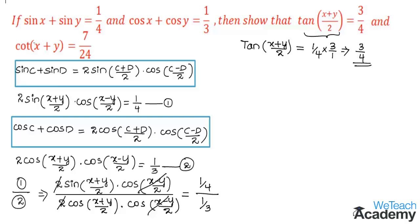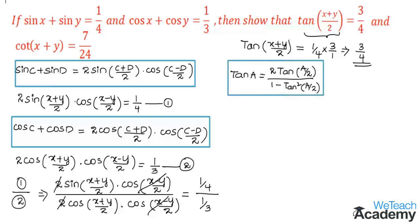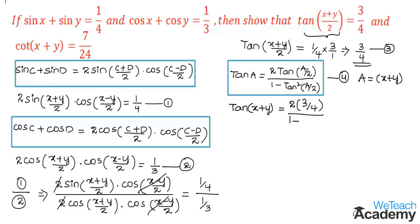Now to prove cot(x+y) equals 7 by 24, let us use the double-angle formula: tan A equals 2 tan(A/2) divided by 1 minus tan²(A/2). We name the proven result tan((x+y)/2) = 3 by 4 as equation 3, and this formula as equation 4. Substituting A as (x+y) and using equation 3, we get tan(x+y) equals 2 into (3 by 4), whole divided by 1 minus (3 by 4)² which is 9 by 16.